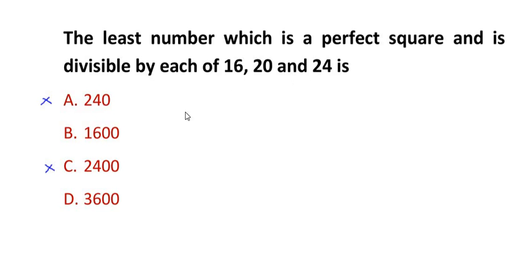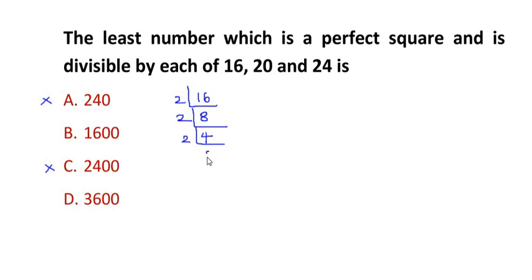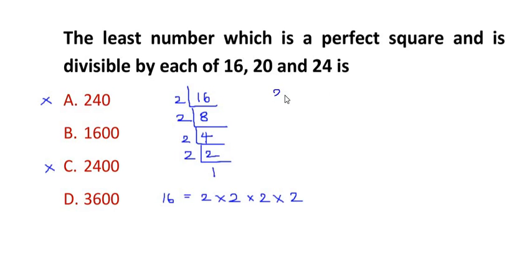We will use prime factorization. For 16: 2 times 8 is 16, 2 times 4 is 8, 2 times 2 is 4, and 2 times 1 is 2. So the factors of 16 are 2 × 2 × 2 × 2.